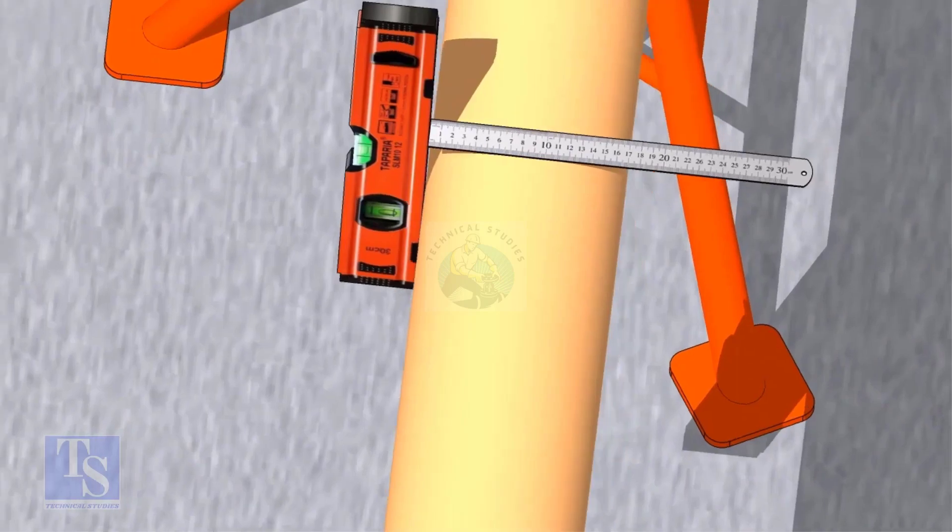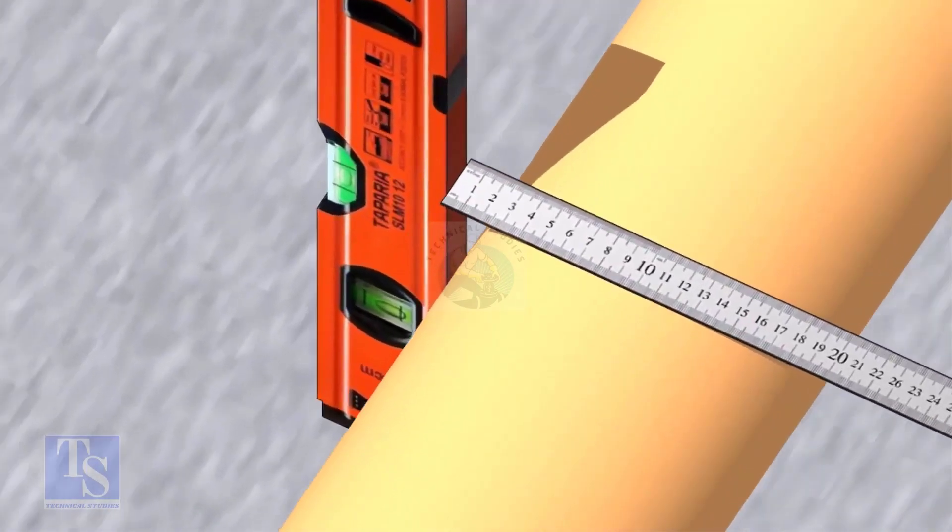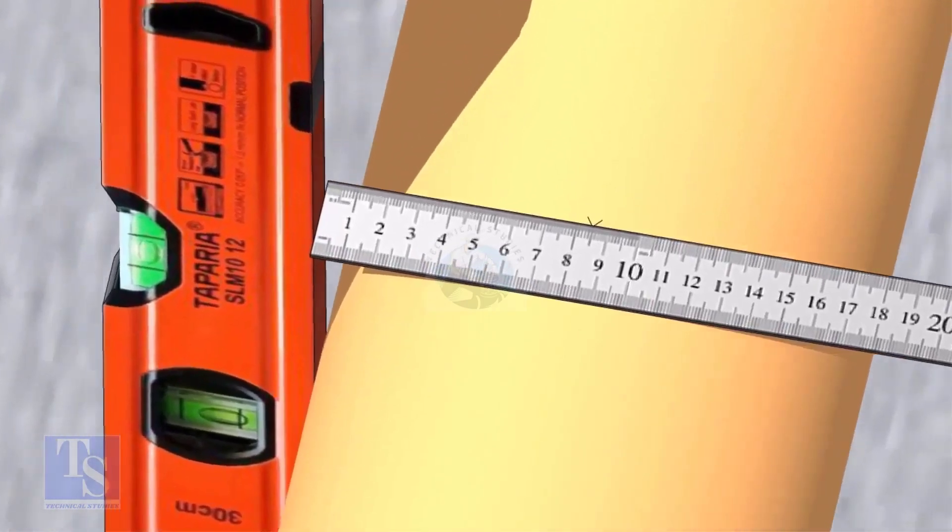OD of a 6 inch pipe is 168 millimeters, so mark the half OD 84 millimeters as shown.